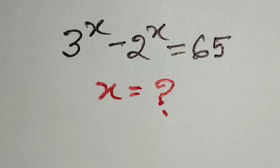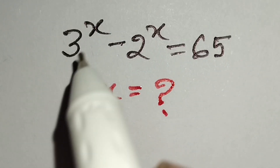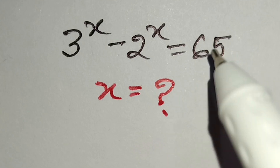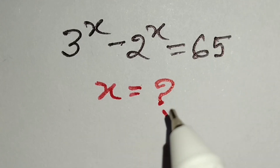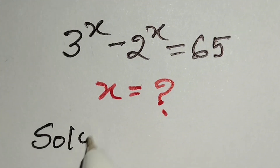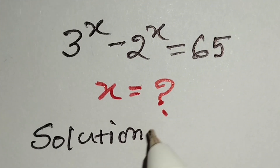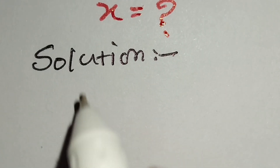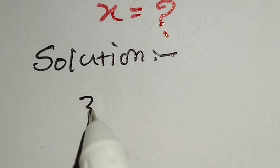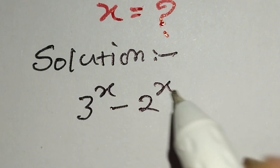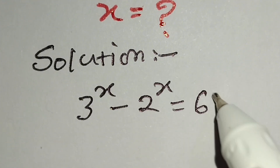Hello, this is a nice math problem: 3 to the power x minus 2 to the power x is equal to 65. We have to find the value of x, so let's start the solution. The given equation is 3 to the power x minus 2 to the power x is equal to 65.